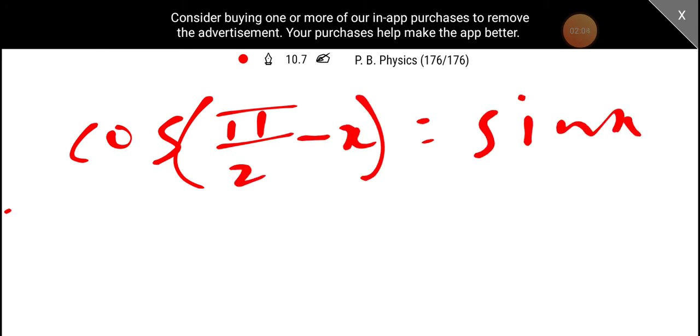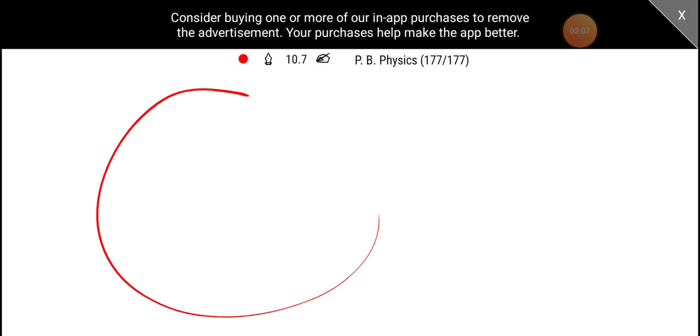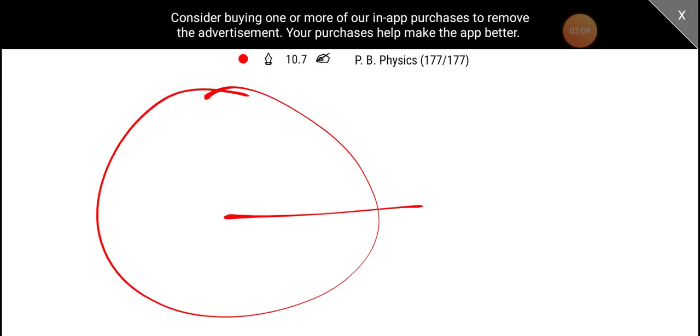Look at this circle. This is x axis. This is y axis. This is 90 minus pi by 2 minus x. We want the x axis to the ripple.